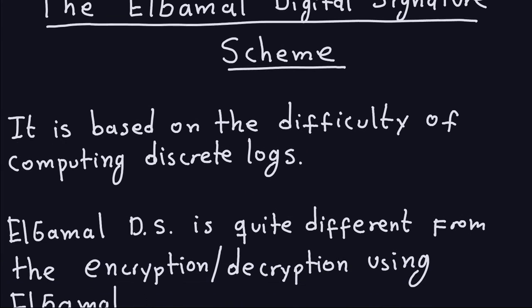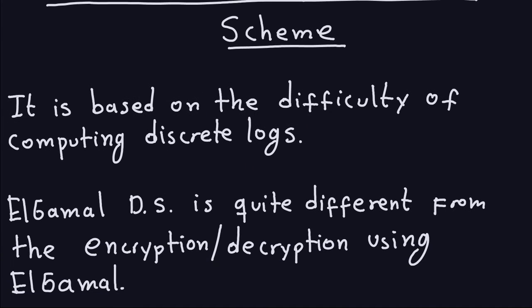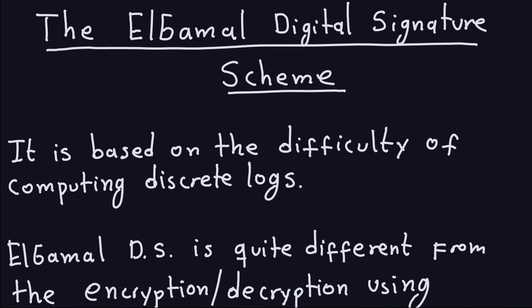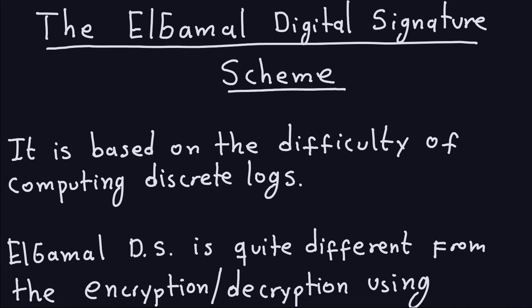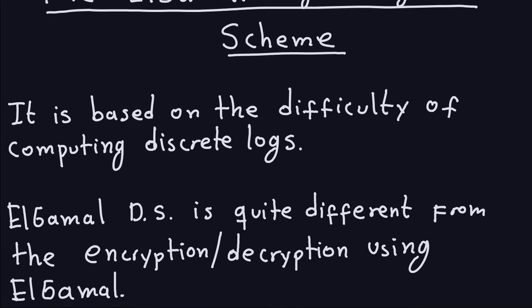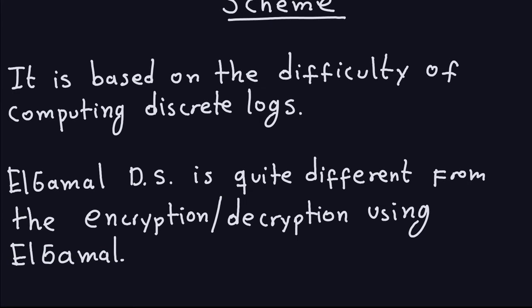The RSA digital signature is very similar to the encryption and decryption using RSA. This is not the case for the ElGamal digital signature, which is quite different from the encryption and decryption using the ElGamal, and you will see in a second why that's very different.